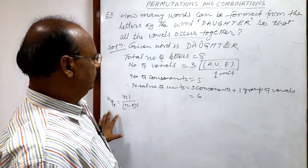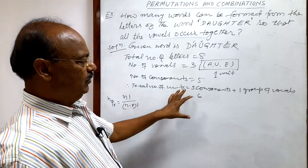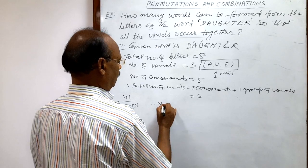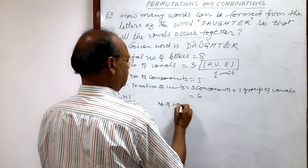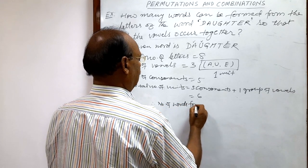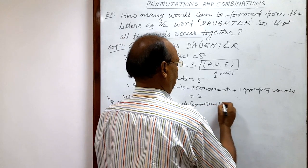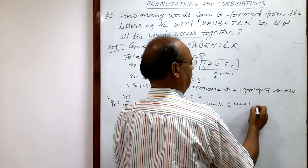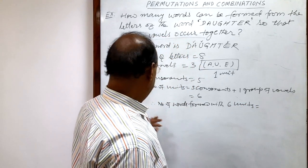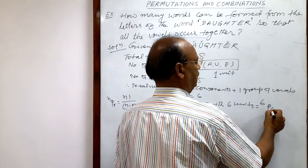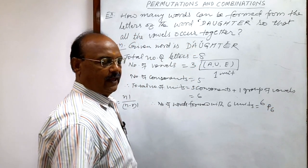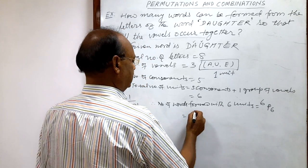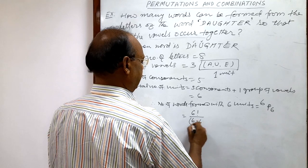So with the help of this formula, the total number of arrangements means, therefore, number of words formed with these 6 units is how much? By nPr formula, that is 6P6, and by this formula, this is 6 factorial by 6 minus 6 factorial.